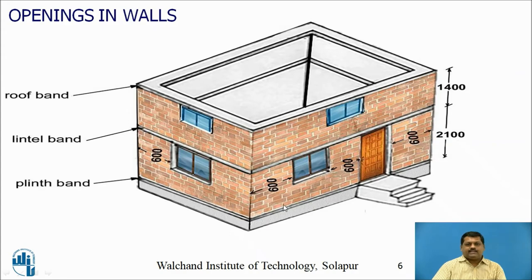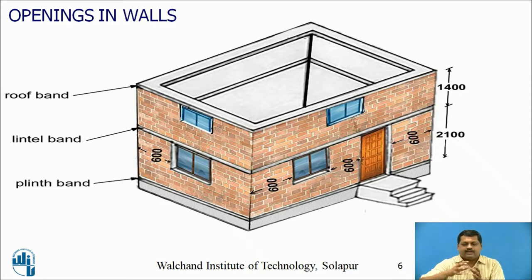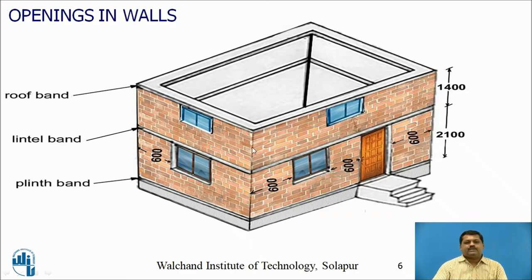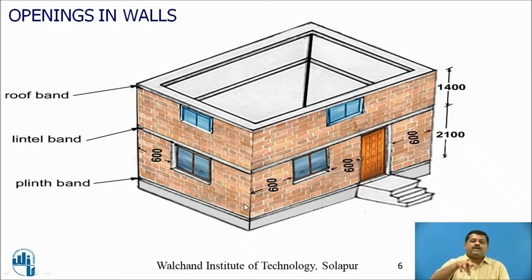To ensure integral behavior, an RCC band is provided at the plinth level — like a rubber band confining all four walls. Similarly, a band is provided at the lintel level, above door and window openings, because openings cause changes in stiffness. A roof band is provided at roof level. These three RCC bands — plinth band, lintel band, and roof band — ensure integral action of all four walls of the building.